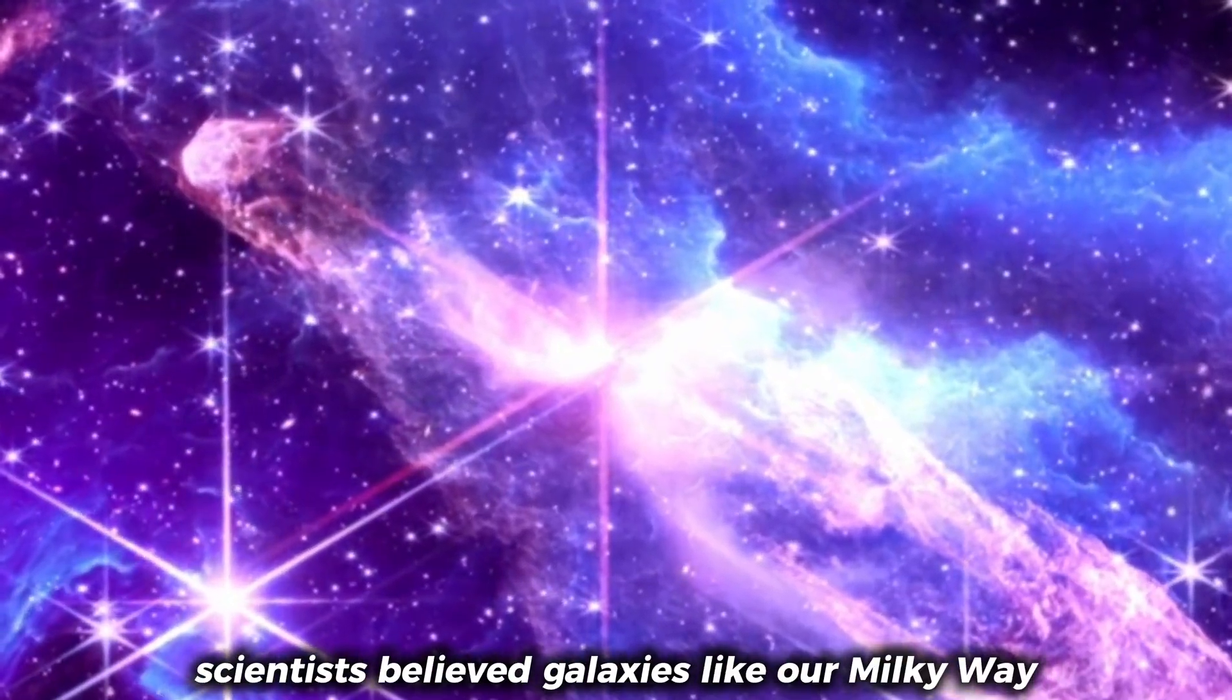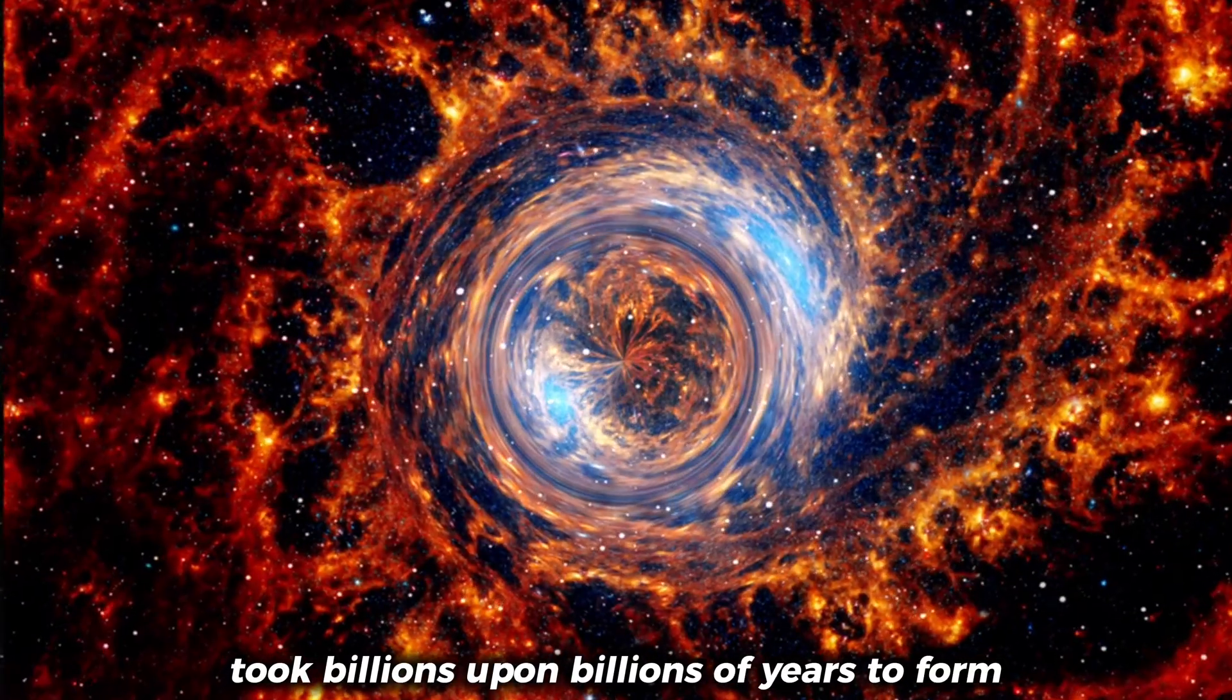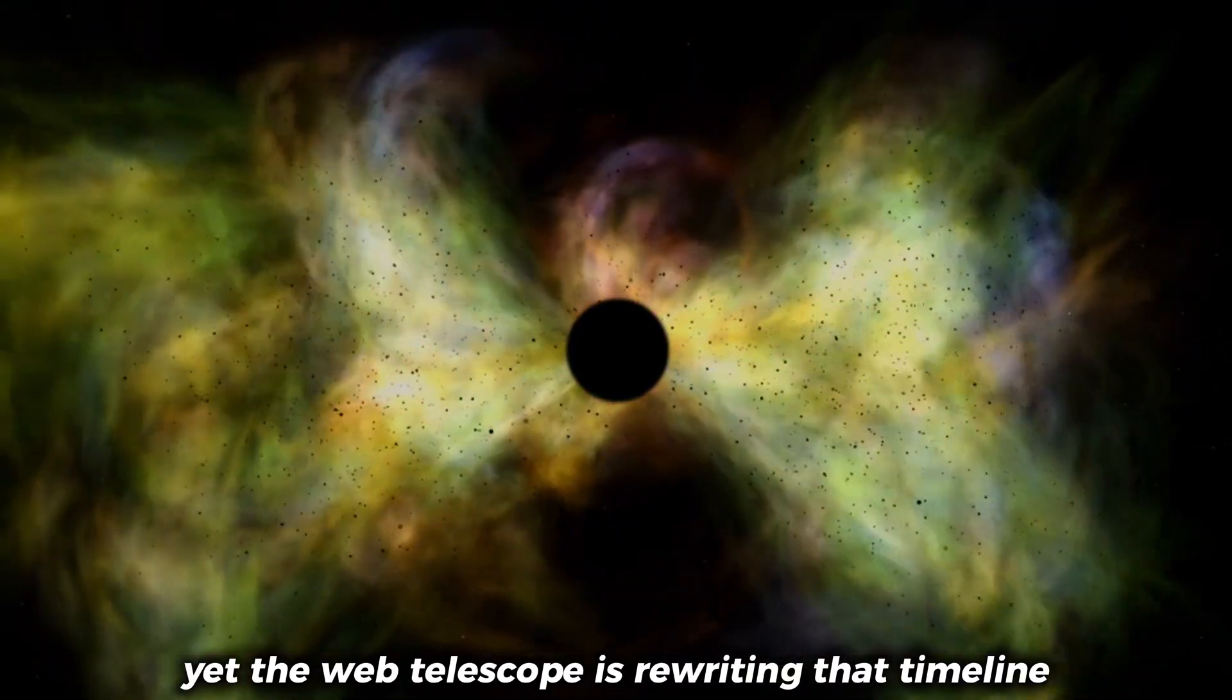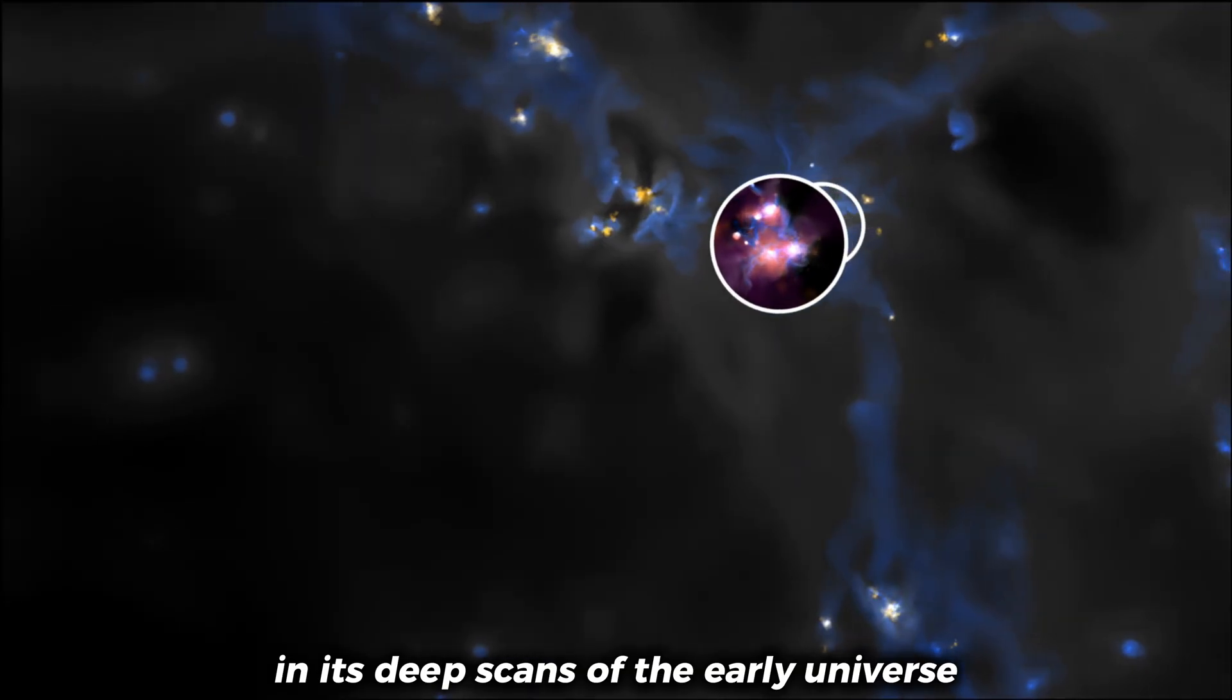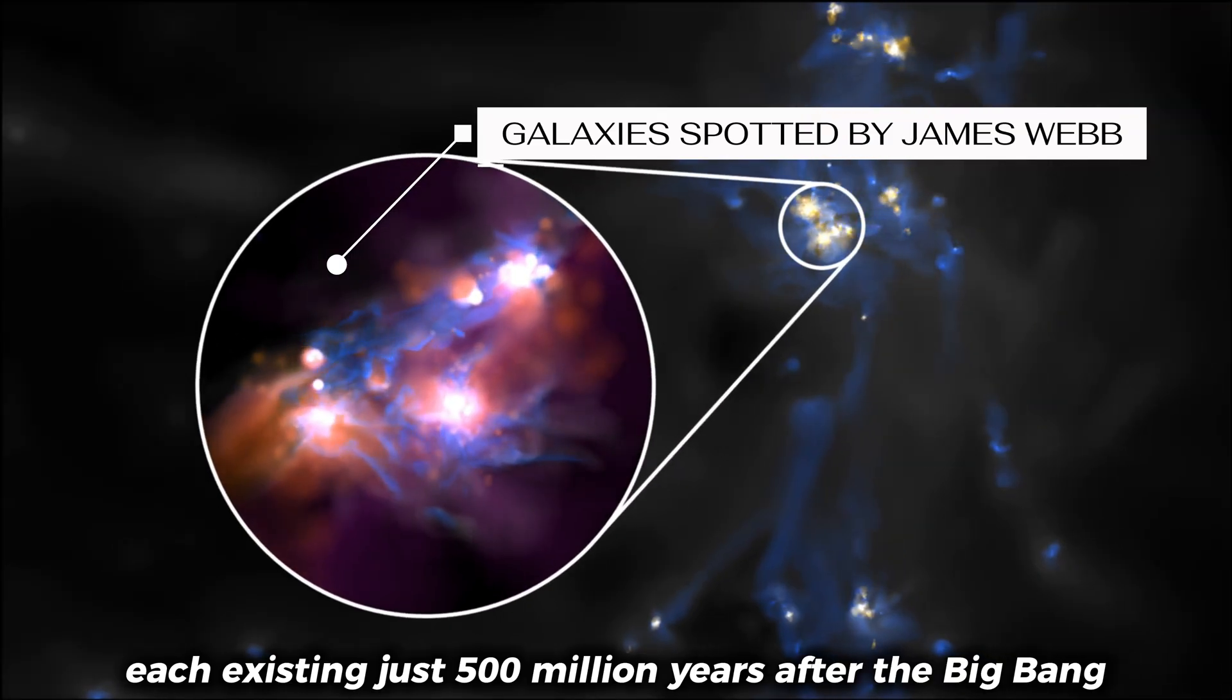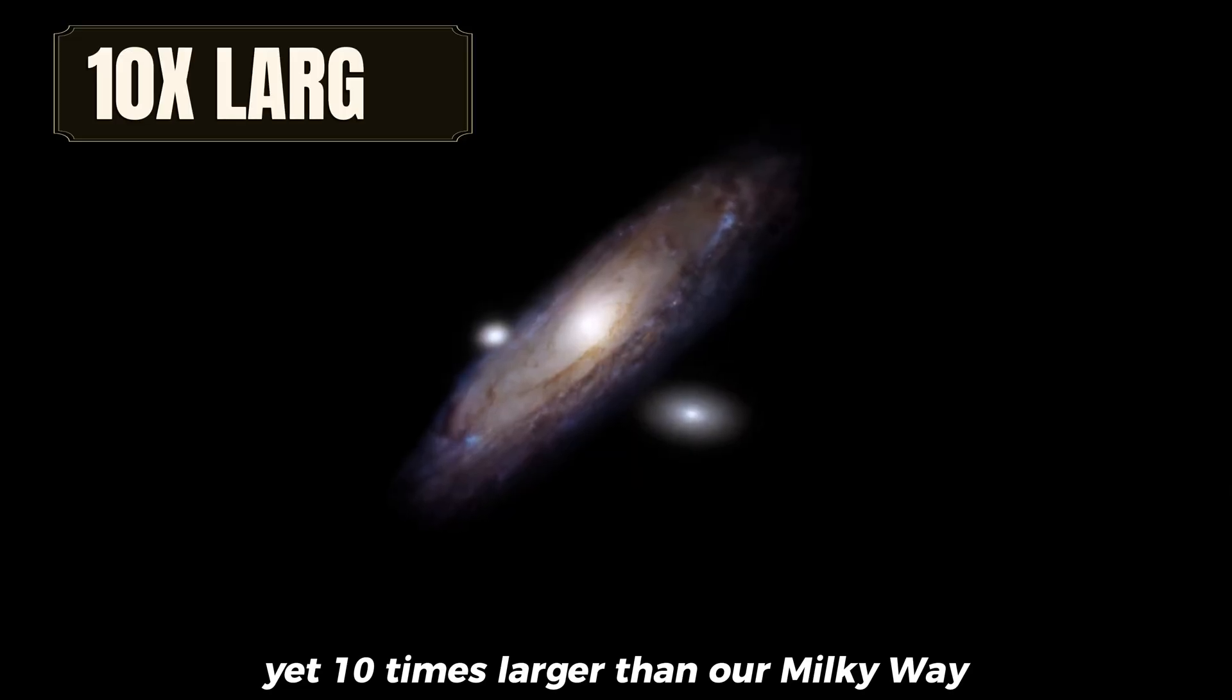For decades, scientists believed galaxies like our Milky Way, with its 100 billion stars, took billions upon billions of years to form. Yet the Webb Telescope is rewriting that timeline in the most dramatic way imaginable. In its deep scans of the early universe, it has spotted six colossal galaxies, each existing just 500 million years after the Big Bang, yet ten times larger than our Milky Way.